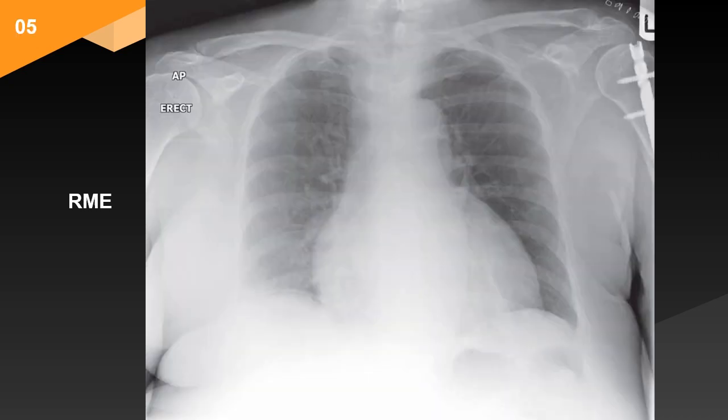This is an anteroposterior erect chest radiograph of an adult female patient. There are several findings of note. Firstly, at the right base the appearance is suggestive of free subdiaphragmatic gas. There is also a rounded mass measuring approximately 3 cm projected over the right heart border. There has been a left mastectomy.